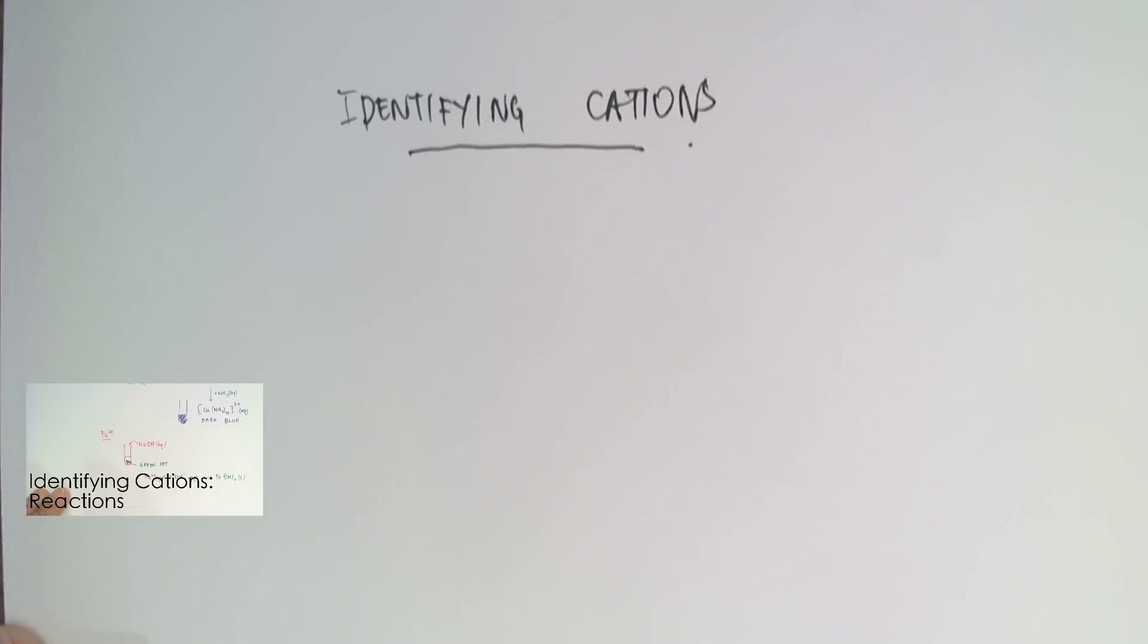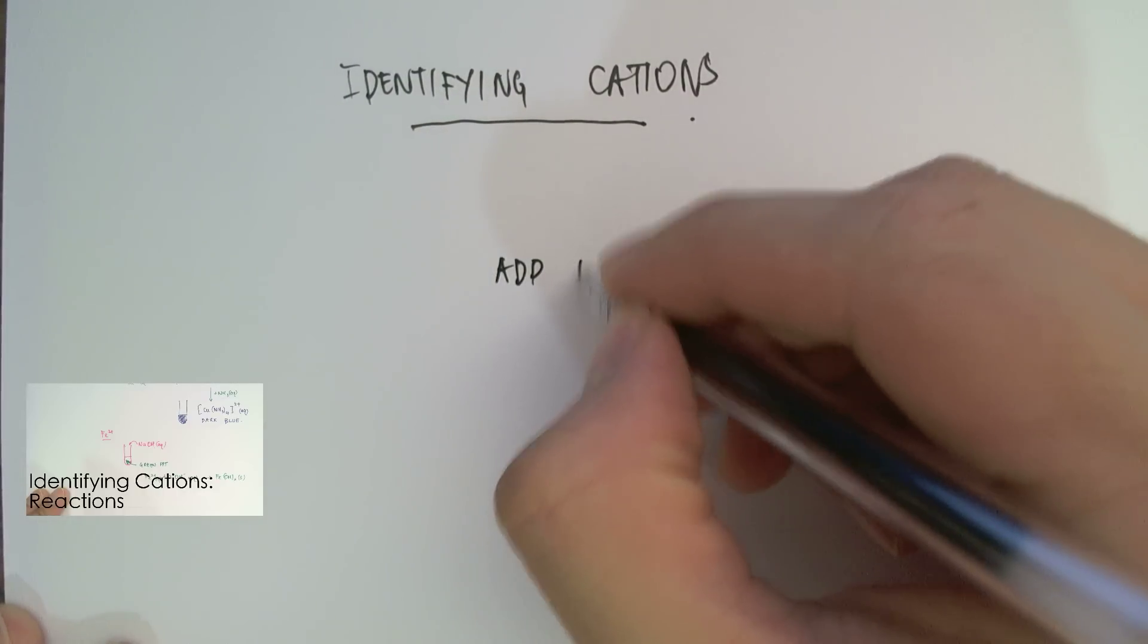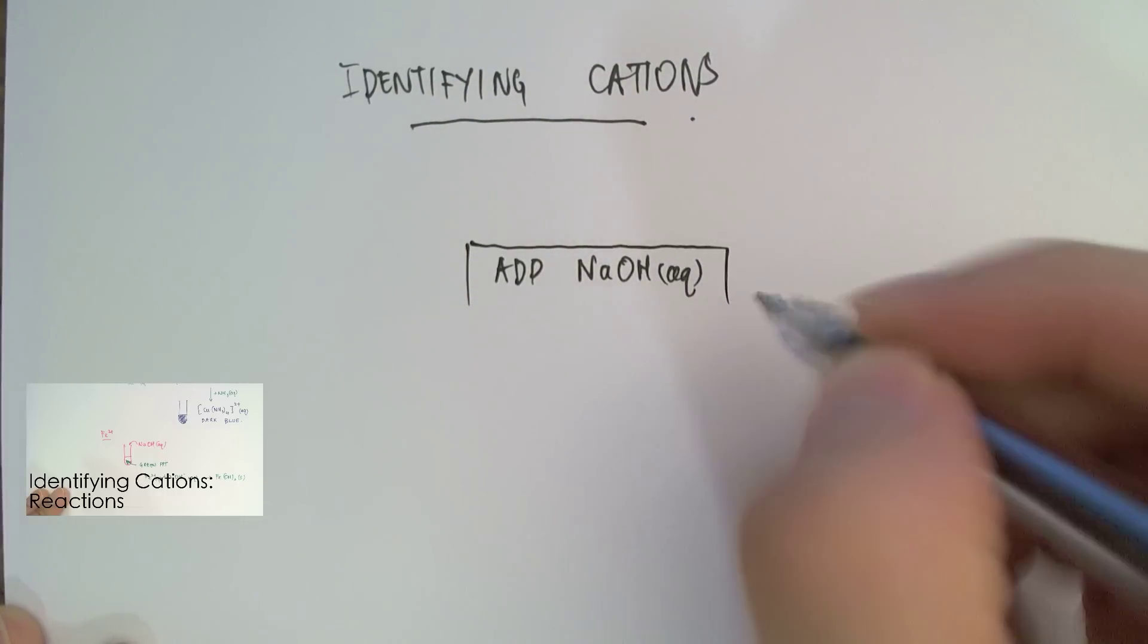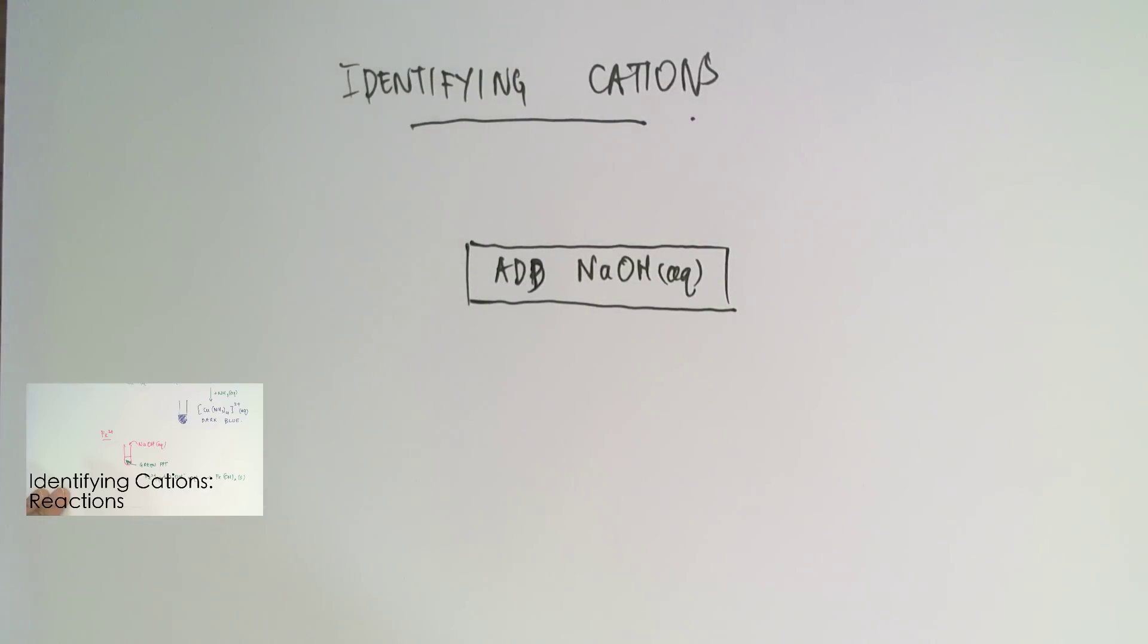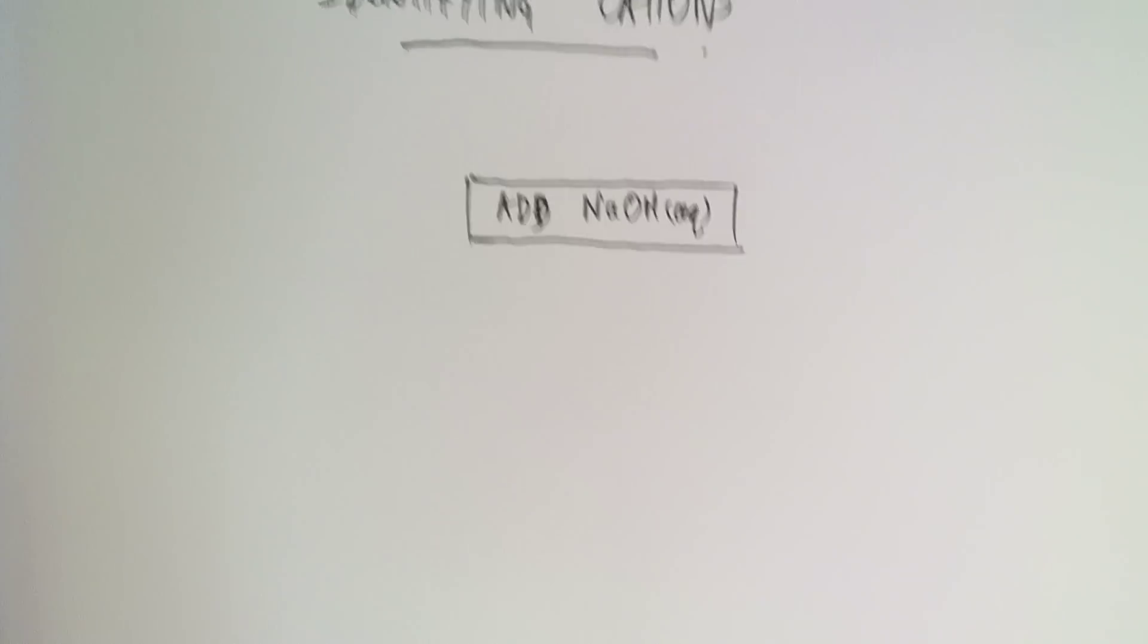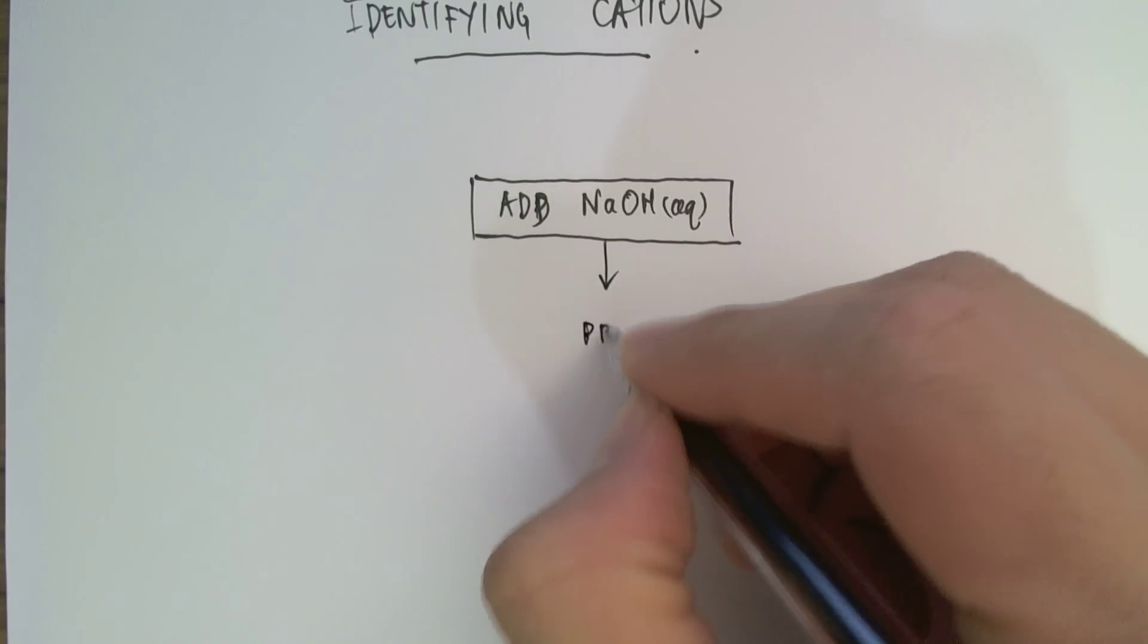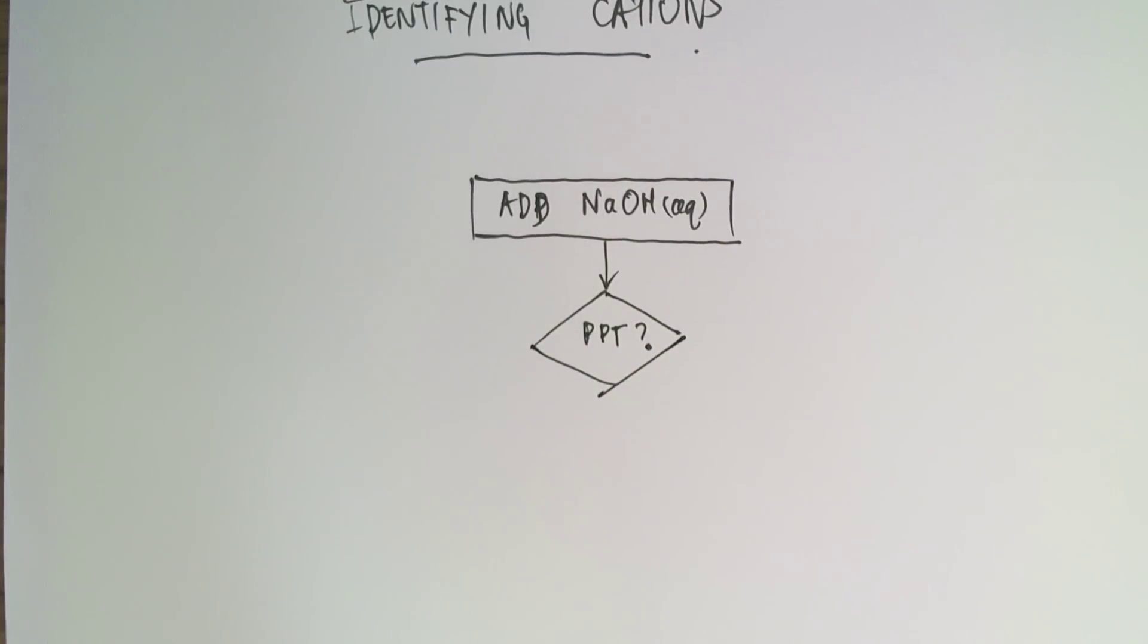So our topic is identifying cations. So the first step with any test is to add aqueous sodium hydroxide. Okay, and once you've done that, the first question you need to ask is whether or not a precipitate has formed. So did it or did it not form a precipitate?